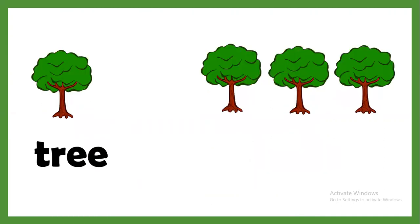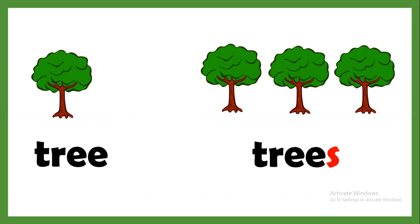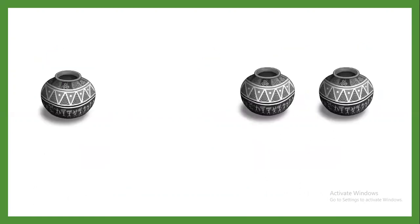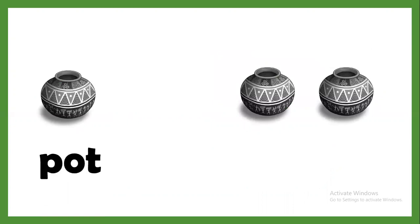One tree. T-R-E-E, tree. Many trees. T-R-E-E-S. We have to add S. One pot. P-O-T, pot. Many pots. P-O-T-S.